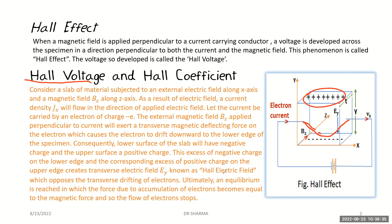The lower edge is at lower potential and the upper edge is at higher potential. This potential difference is called the Hall voltage, and the corresponding electric field is called the transverse electric field — transverse because it is perpendicular to the direction of both the applied electric field and magnetic field. The applied electric field is in the x-direction, the magnetic field is in the z-direction, and the Hall electric field is in the y-direction.